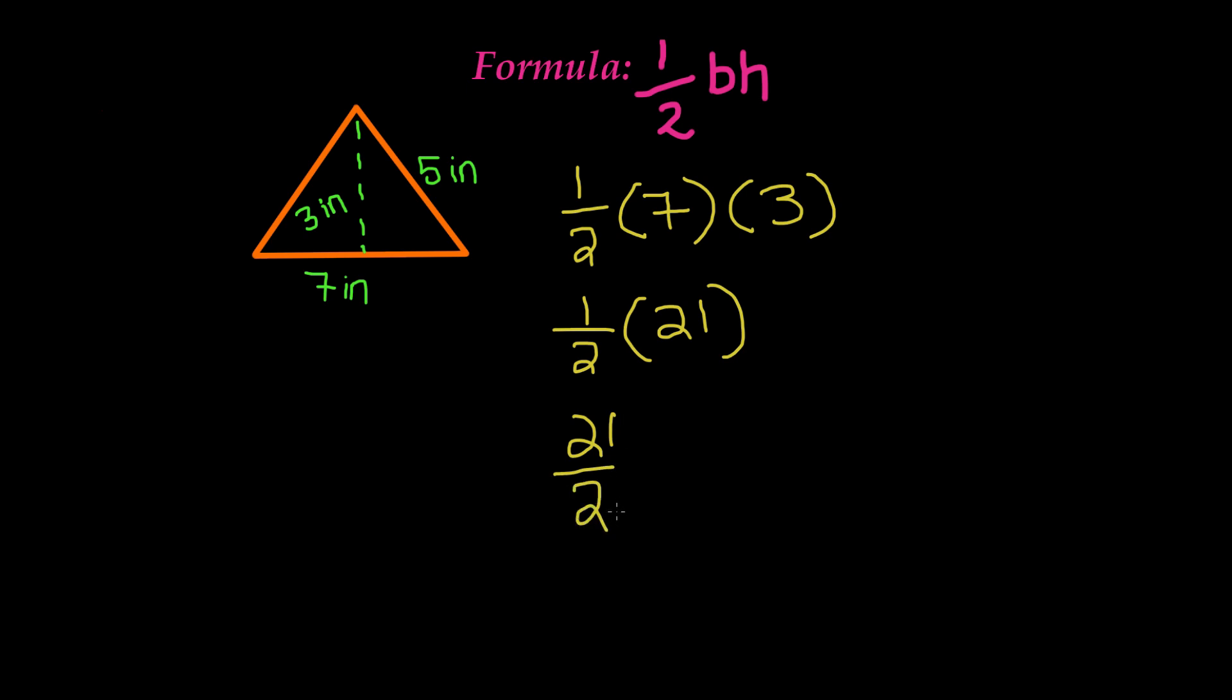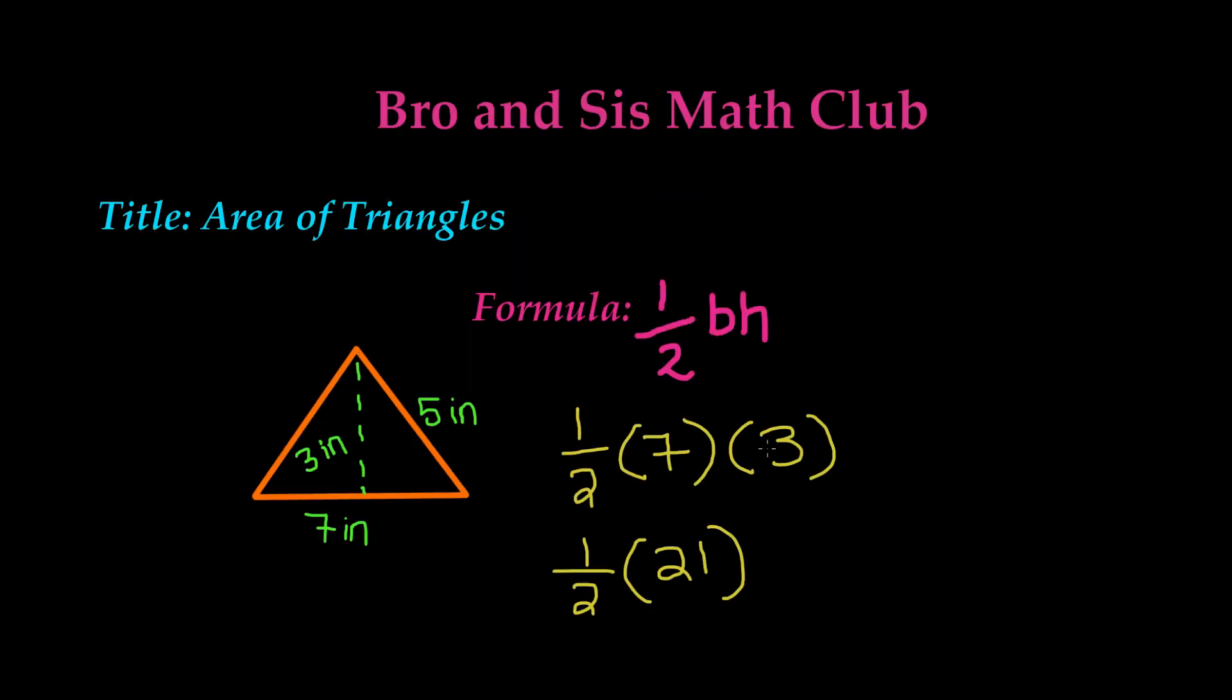21 divided by 2 is 10.5. That means the area of this triangle is 10.5 inches squared.